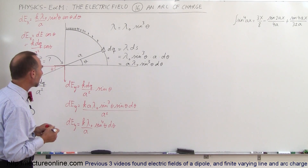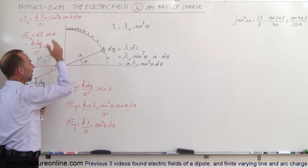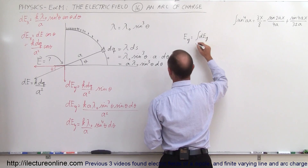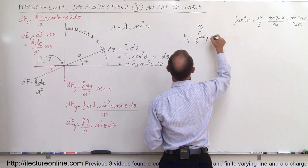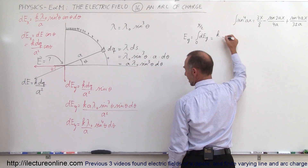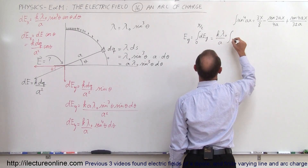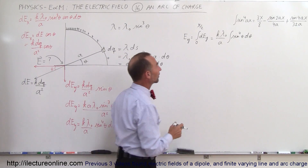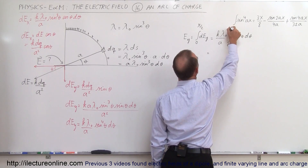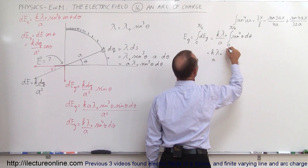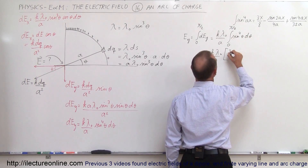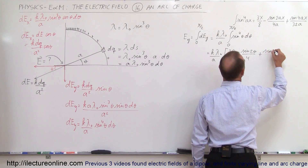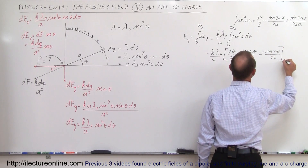Let's integrate from theta equals zero to theta equals pi over two. So Ey equals the integral from 0 to π/2 of (k·λ₀/a)·sin⁴(θ)·dθ. Taking constants out: Ey = (k·λ₀/a) times the integral of sin⁴(θ)·dθ. Using the reduction formula already written in the upper right corner, this evaluates to (k·λ₀/a) times [3θ/8 − sin(2θ)/4 + sin(4θ)/32] from 0 to π/2. Substituting: the sine terms vanish at both limits, leaving 3π/(16), so Ey = 3k·λ₀·π / (16a).